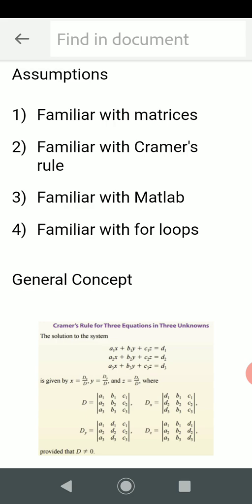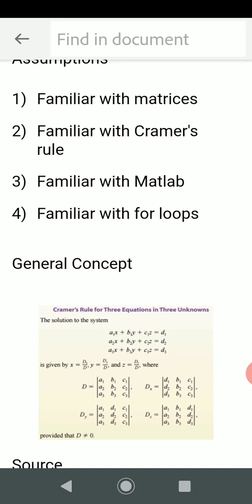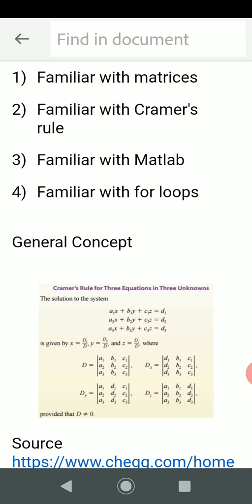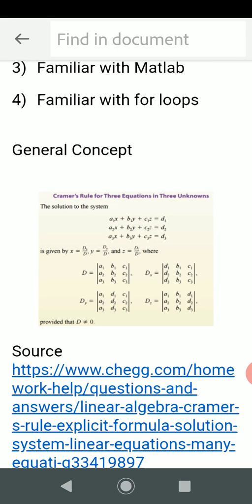Assumption one: we're familiar with matrices. Number two: we're familiar with Cramer's rule. Number three: you're familiar with MATLAB. And number four: you're familiar with for loops. I just took that from Chegg, so that's the general solution, and I'm not going to go through it. I assume if you're here you know what's going on.